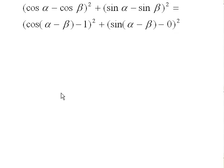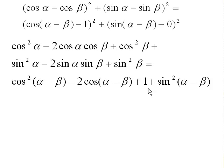Let's expand it. Cosine alpha minus cosine beta, squared — just the binomial squared. Sine alpha minus sine beta, squared — foil it to get those terms. This has to match cosine of (alpha minus beta) minus 1, squared — that gives three terms on the right-hand side. And sine of (alpha minus beta) minus 0 is just sine of (alpha minus beta), squared.